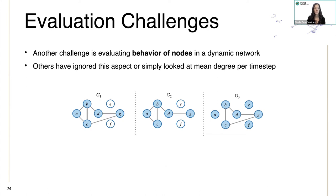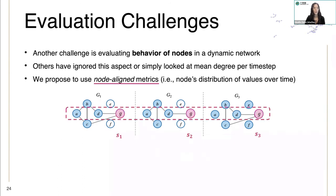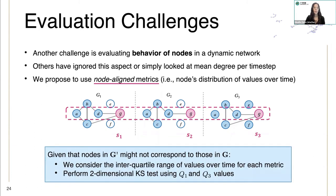Another challenge is evaluating the behavior of nodes in a dynamic network. We propose to use node-aligned metrics, and we refer to a node's distribution of values over time. Additionally, given that nodes in the generated graph might not correspond to those in the observed graph, we consider the interquartile range of values over time for each metric, and then we perform a two-dimensional KS test using the first and third quartile values.